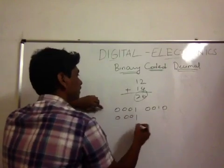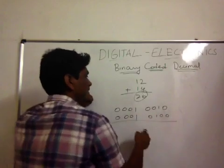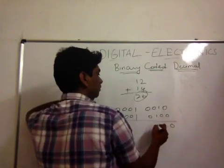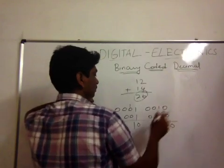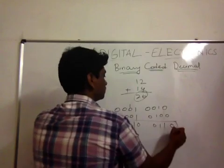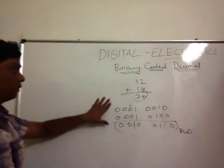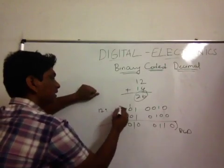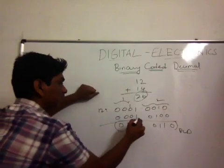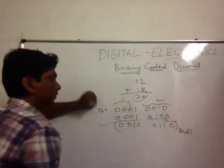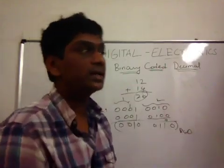14 in BCD is 0001 0100, where 0001 represents 1 and 0100 represents 4. We write them in BCD and then add using simple binary addition principles. Adding the two BCD numbers: the rightmost bits give 0, then 1, then 1, then 1 plus 1 gives 0 with a carry of 1, and so on through the remaining bits.